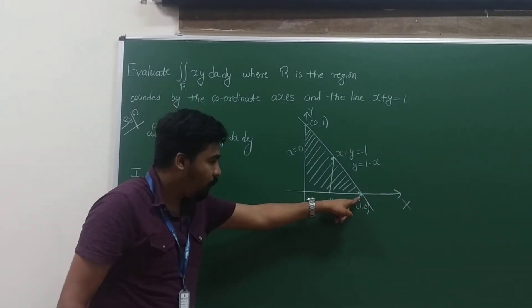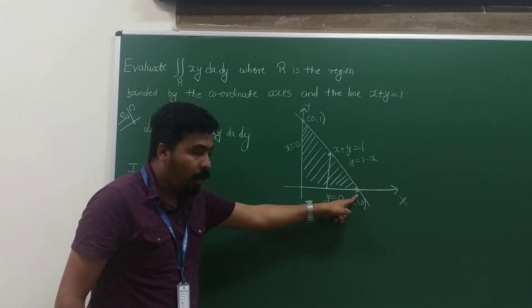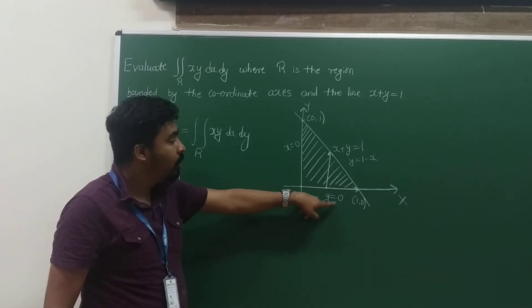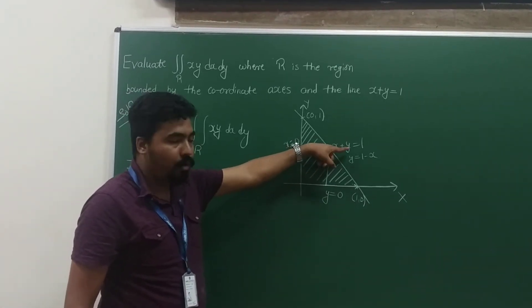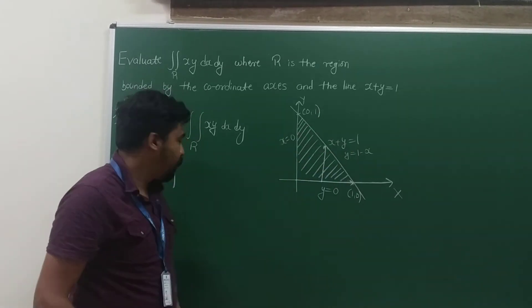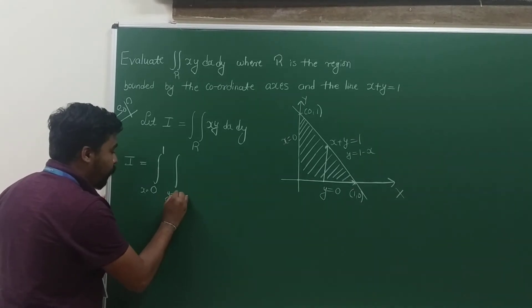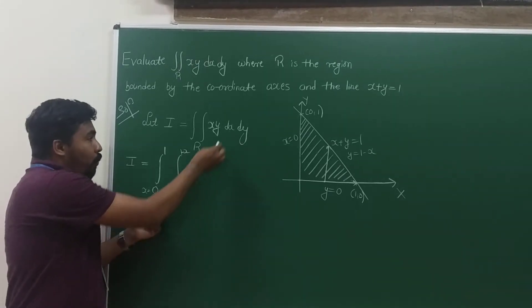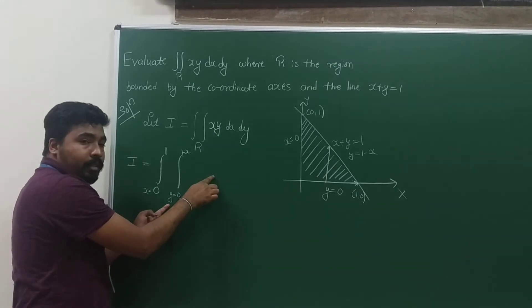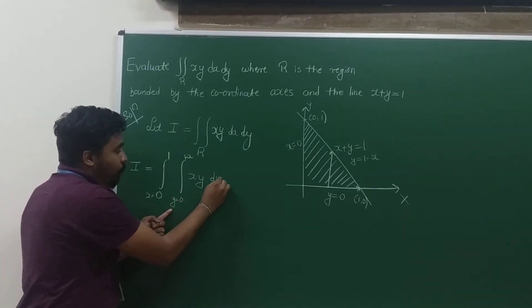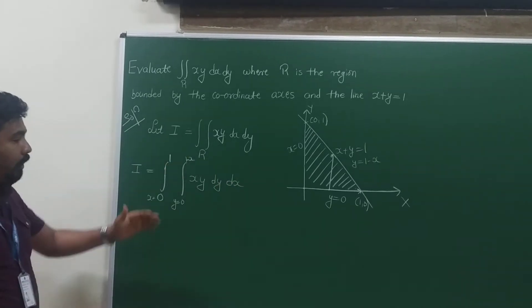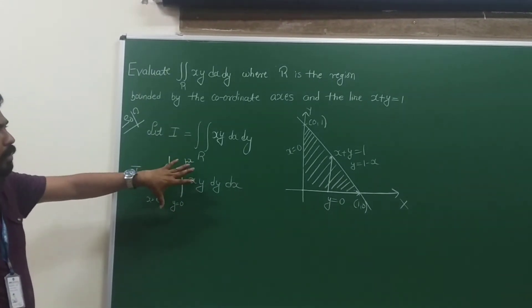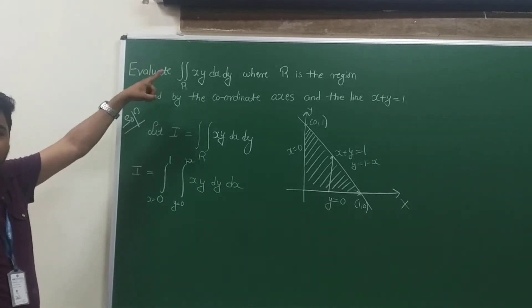Since I am fixing x as a constant, x varies from 0 to 1 and y varies from 0 to 1 − x. Since the first limits are y limits, we write the operator first with respect to y. That is: I = integral from x=0 to 1, integral from y=0 to 1−x of x·y dy dx. This step is very important when solving problems over a specific region.